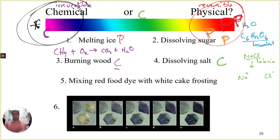Continuing on, mixing red food dye with white cake frosting. This ends up being a physical. This is probably verging on that orange-yellow because we think about that reversibility. It is technically reversible. It's just not easy to see. But that's a pretty solid physical change.